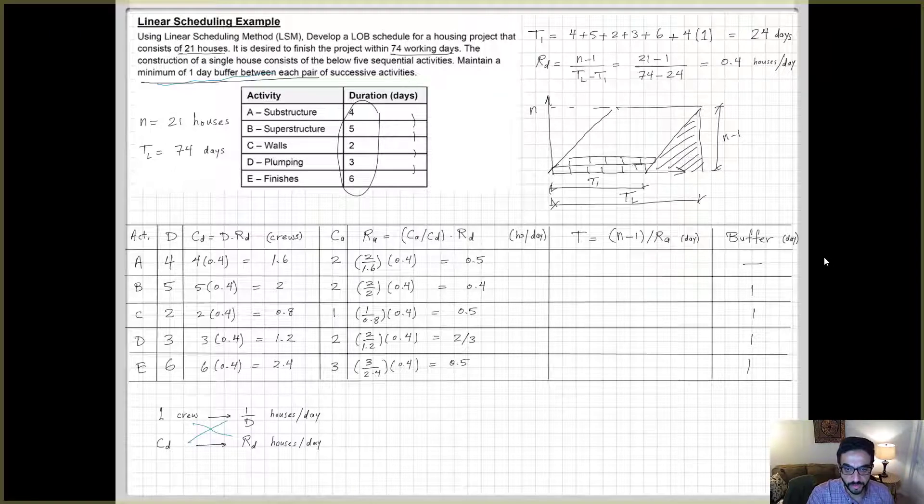Some of them are around following the same value of 0.4, some are more, and actually all of them are more. This has to be, they all have to be more than your RD because you're rounding up the crews, so you're increasing productivity.